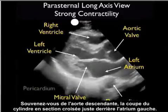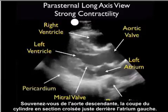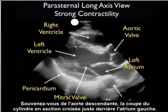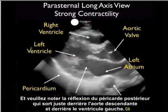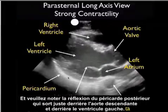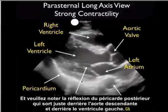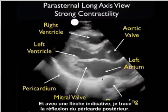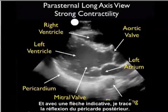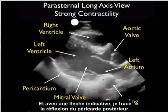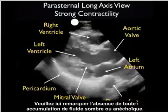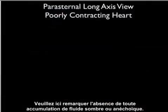Recall the descending aorta, the cylinder cut in cross-section just posterior to the left atrium. Note the posterior pericardial reflection coming off just anterior to the descending aorta and posterior to the left ventricle. With a small indicator arrow, I'll trace out the posterior pericardial reflection. Note here the absence of any dark or anechoic fluid collections.